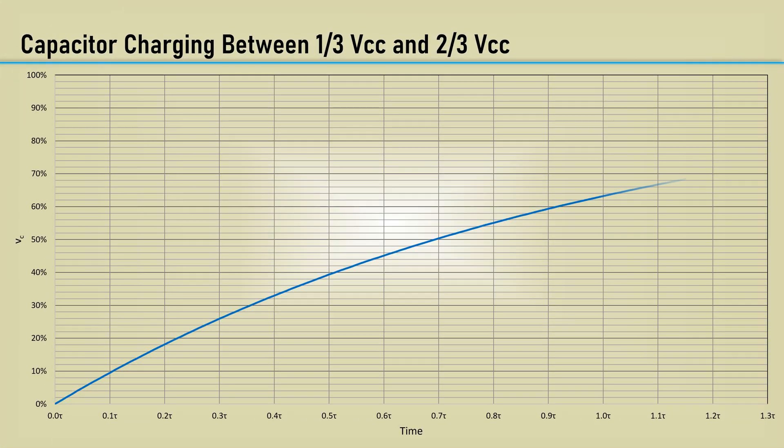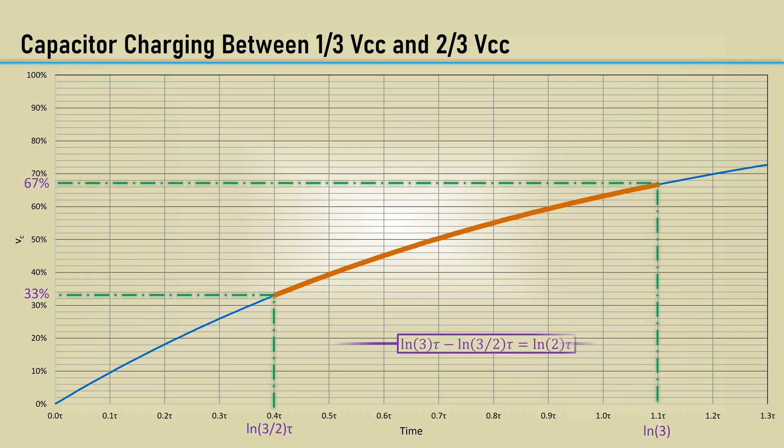Here is a chart of the capacitor voltage during the initial charge of the capacitor. When the capacitor has charged to 33%, the time is about 0.4 tau. And at 67%, the time is about 1.1 tau. That gives us a difference of the natural log of two tau, or approximately 0.6931 tau.